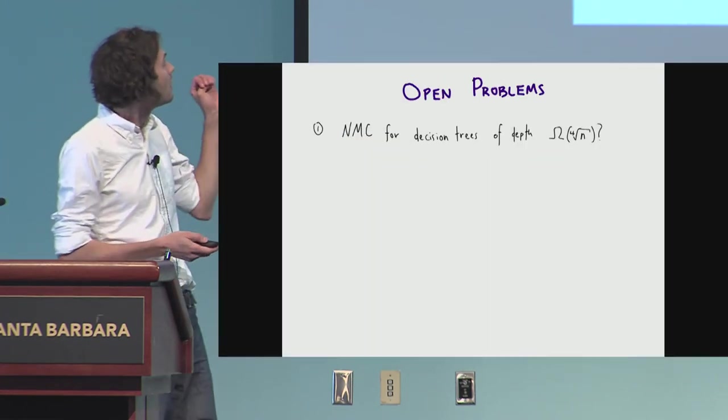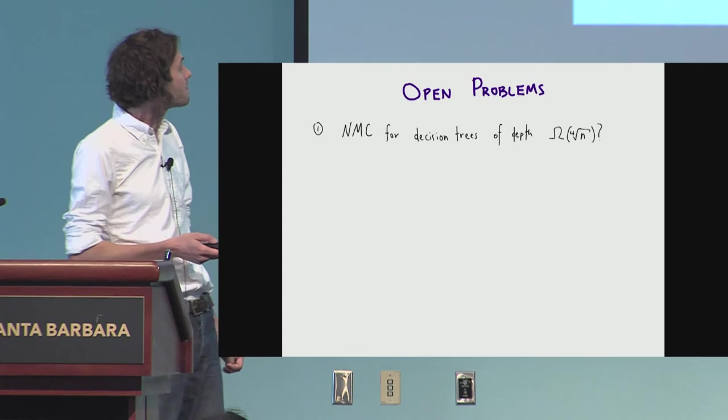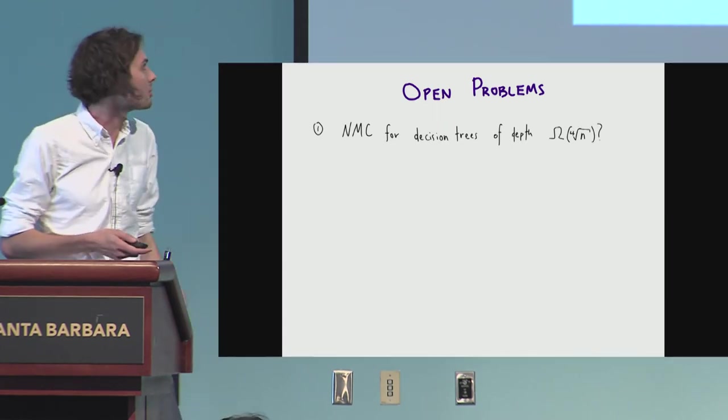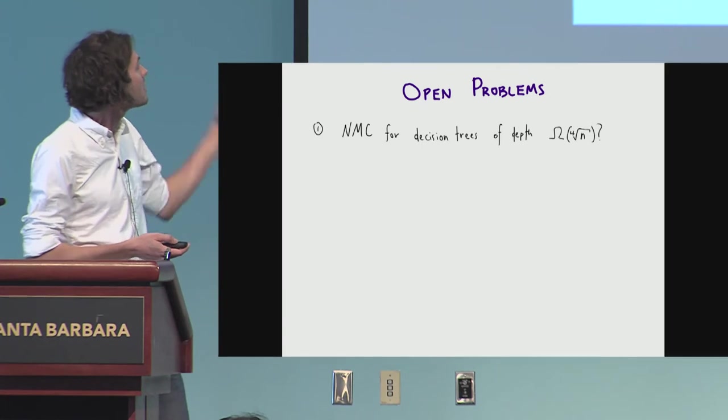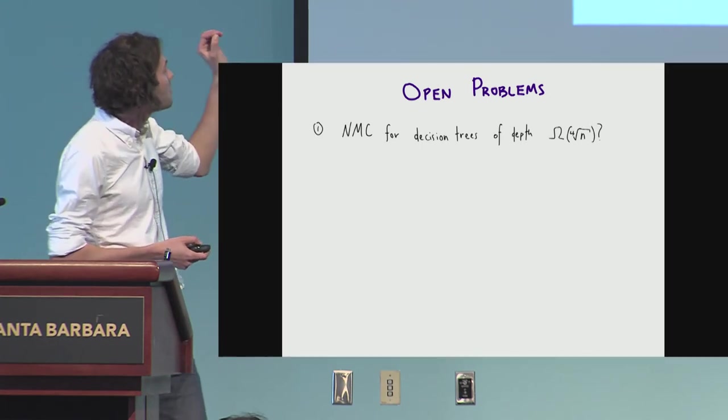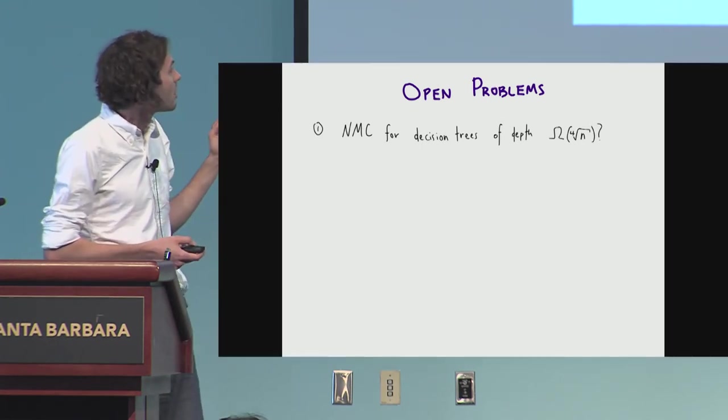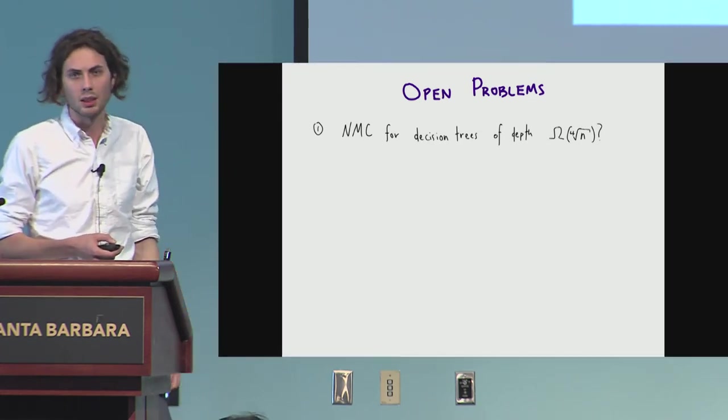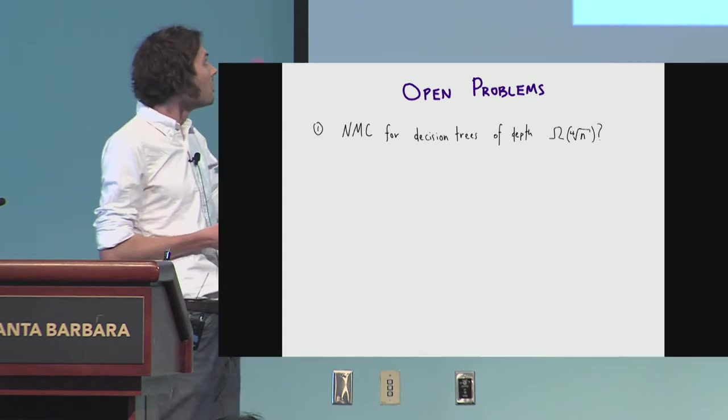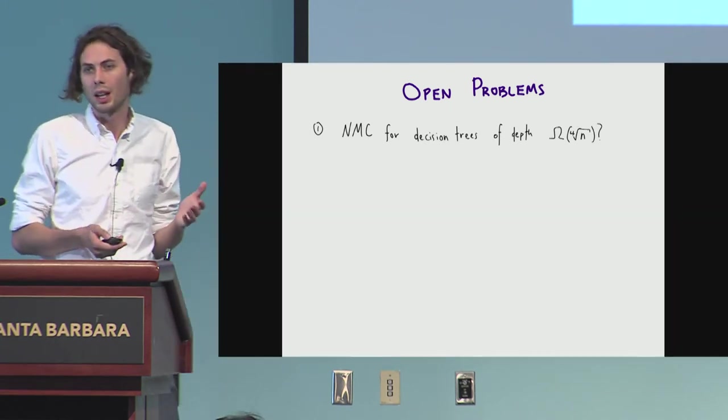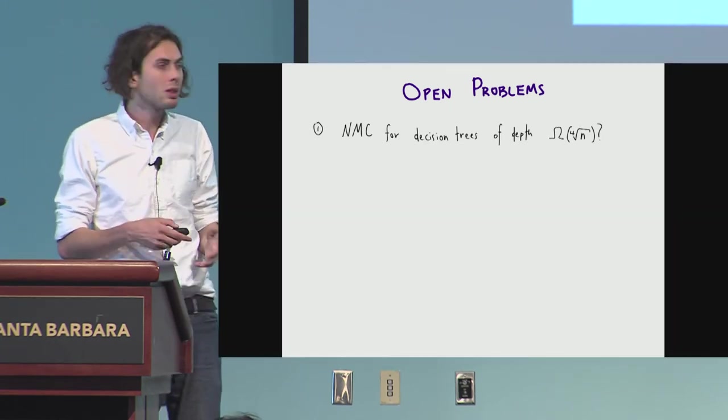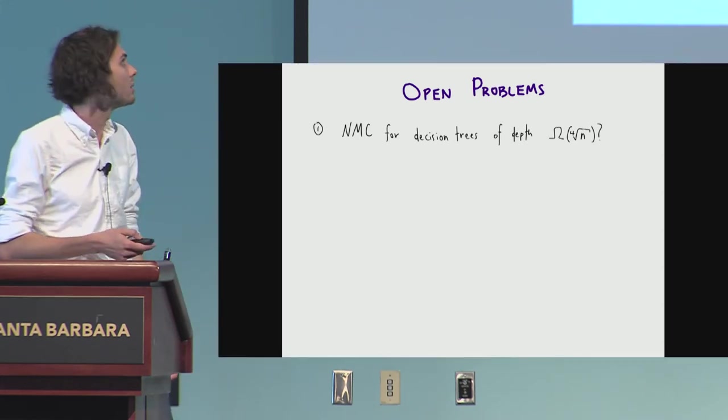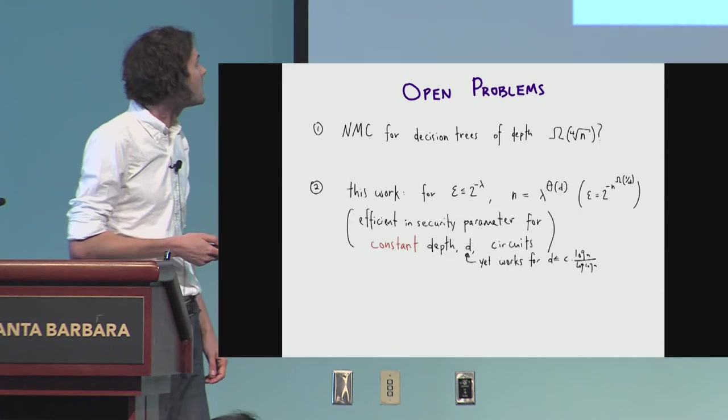So these are our results, and unfortunately I will have to point you to the paper if you would like to learn more of the details. But some open problems, and I'd like to leave you with, because I have a ton of them if you're more interested. We have this non-malleable code, our non-malleable code only works for decision trees up to slightly less than a quarter root. And we don't really understand why, this seems sort of artificial, and so getting a non-malleable code against larger-depth decision trees, we think, is very interesting.